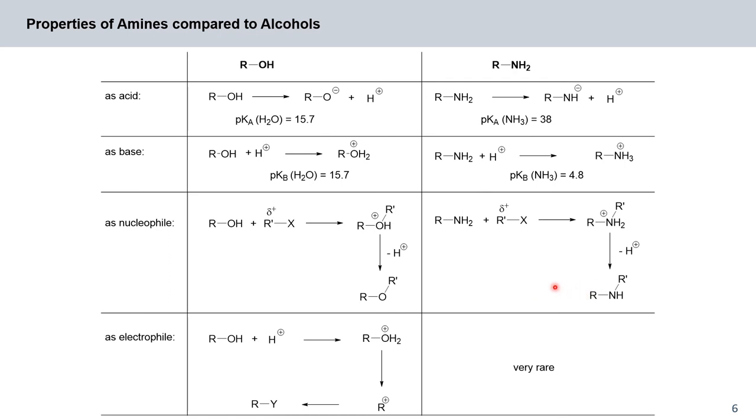Alcohols can also act as electrophiles if activated appropriately. So the moment that you protonate your alcohol, you essentially turn OH into a good leaving group, and then you could come in with an appropriate nucleophile and react it with your R-plus. Amines only very rarely react as electrophiles.